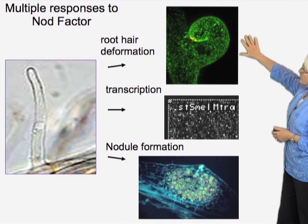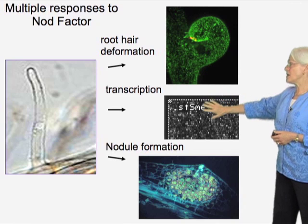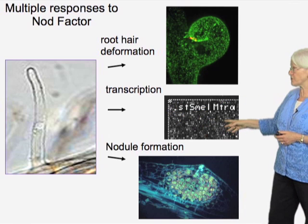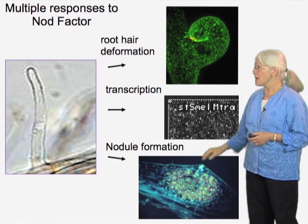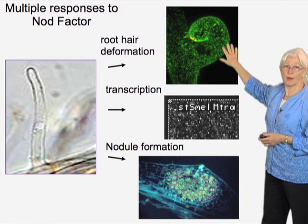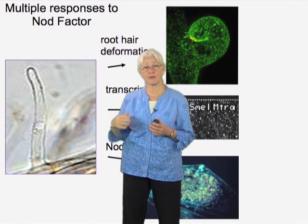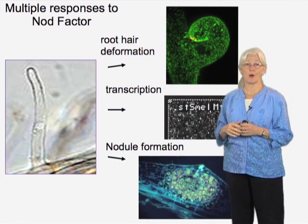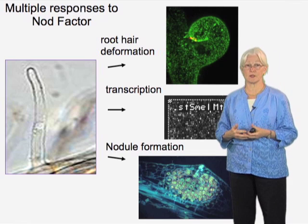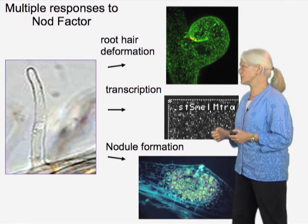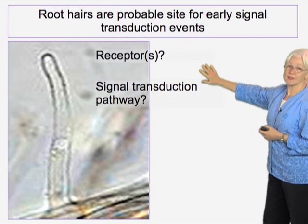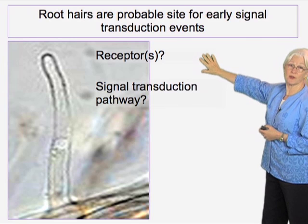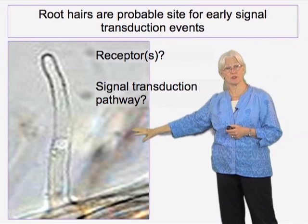Rhizobium can also cause roots to engage in specific transcription, which we've studied with microarrays, and they provoke cell division. Root hairs are on the surface of the plant — they're single cells with a high surface-to-volume ratio, making sense that they're exposed to signals from the outside and might be where signal transduction begins. So we might ask, by cell biology and genetics, are there receptors, what is the signal transduction pathway, and can we study root hairs as a way of capturing those?